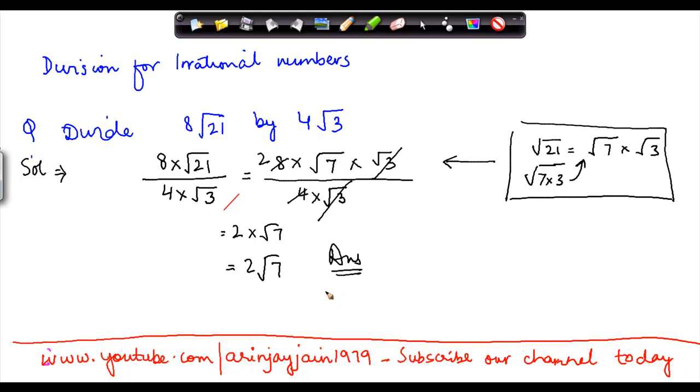So therefore we conclude that division for irrational numbers gives result to an irrational number. But is this correct? Is this statement correct? No, it is not correct.